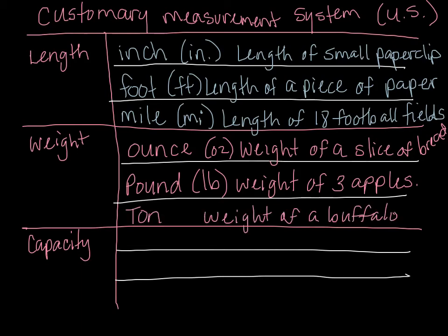A large weight measurement is a ton. There's no abbreviation for ton — it's a small enough word. That would be like the weight of a big buffalo, a big animal — or a big truck, maybe. A ton is very, very heavy; you don't want to be smooshed under a ton. That would be bad.